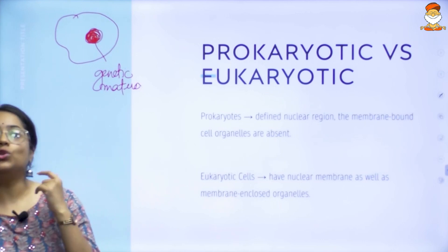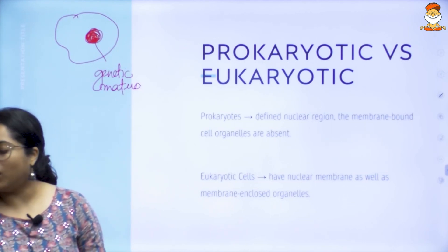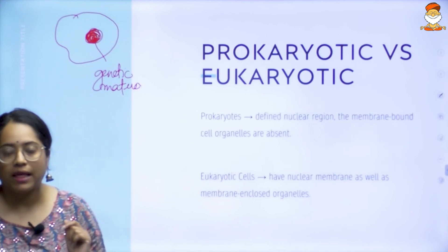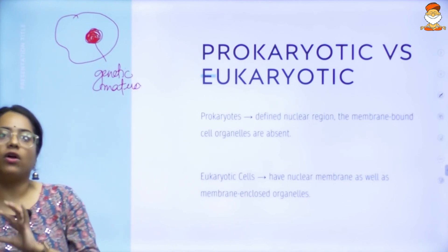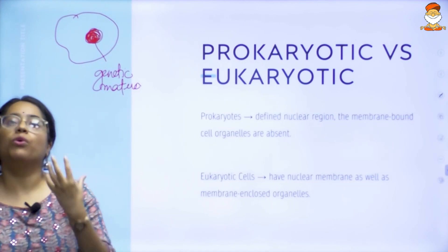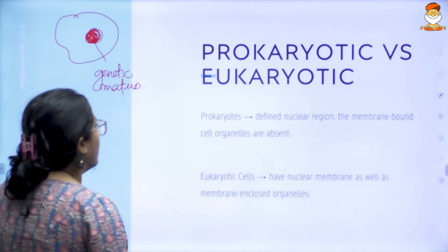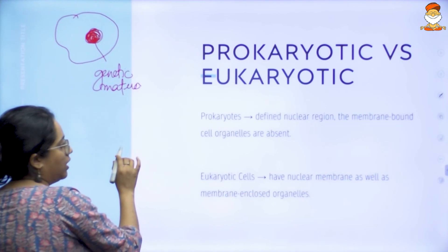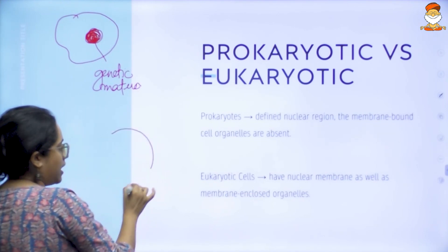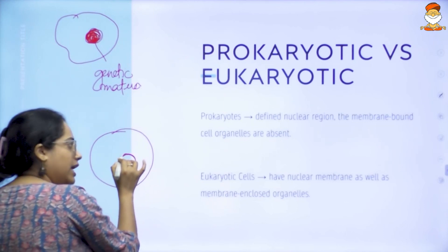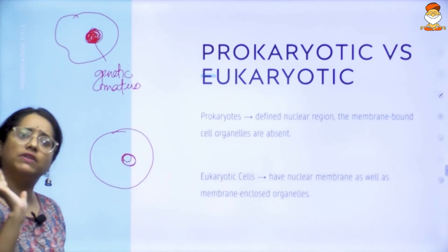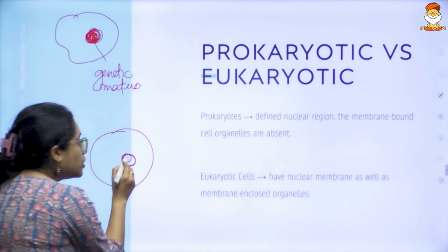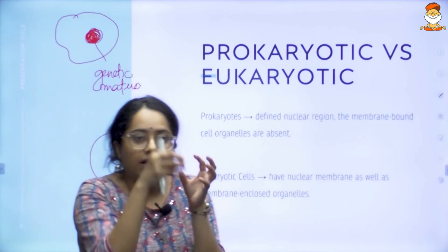Whatever functions the cell has to do, the instructions for it will be in the nucleus. A lot of people commonly think prokaryotic means single-celled and eukaryotic means multi-celled — but that is wrong. The actual difference is: in a eukaryotic cell, such as an animal cell, you have a nucleus with all the genetic material inside it. The nucleus has a nuclear membrane that encompasses everything together.